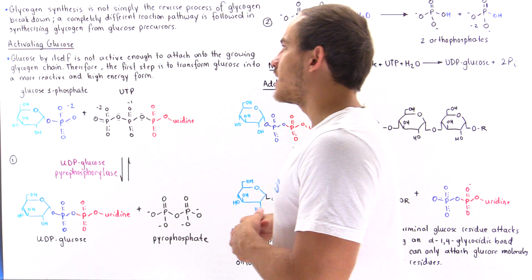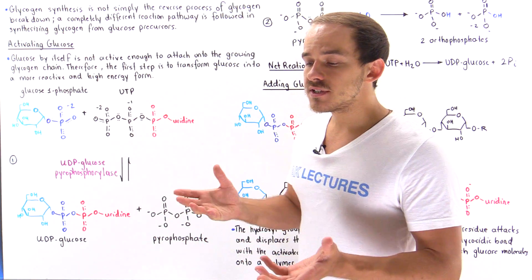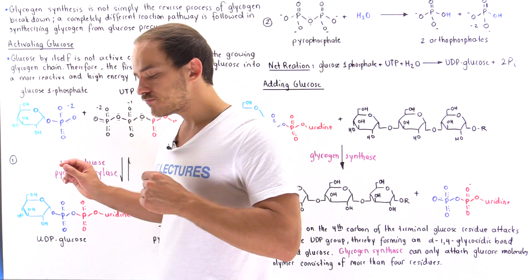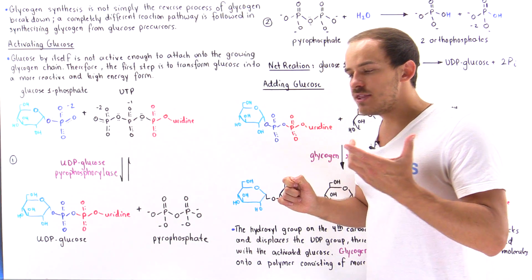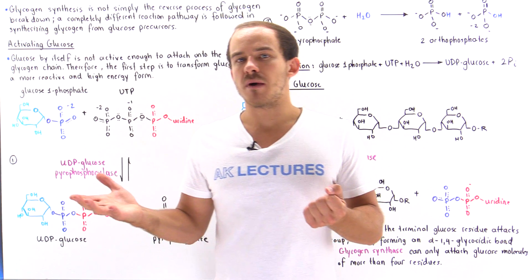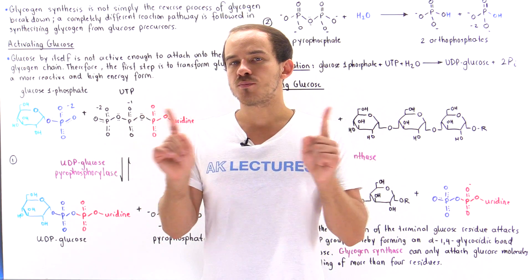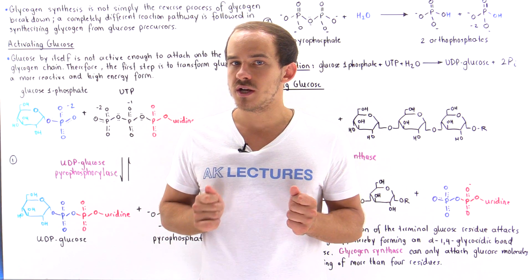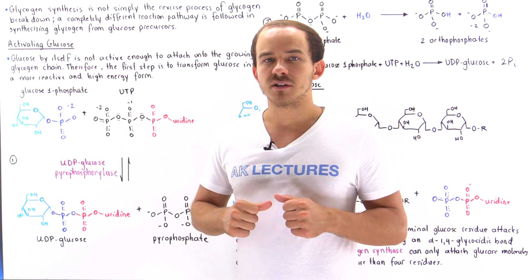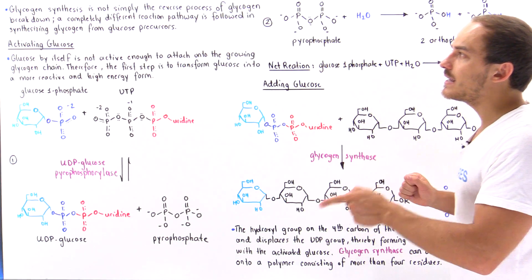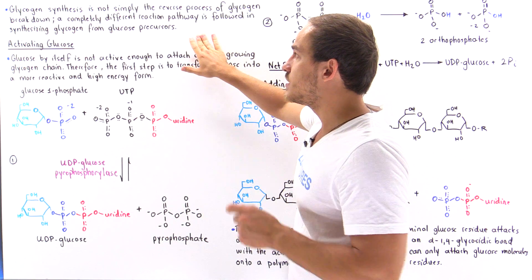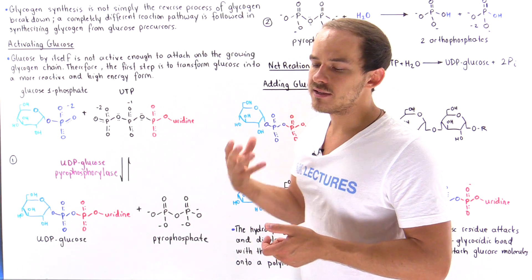What exactly is the process by which we synthesize glycogen in liver cells and skeletal muscle cells? We're going to focus on that briefly in this lecture and the next. In the same analogous way that gluconeogenesis — the building of glucose molecules — and glycolysis — the breaking down of glucose molecules — are not simply the reverse of one another, glycogen synthesis is not simply the reverse of glycogen breakdown. In fact, glycogen synthesis follows a completely different reaction pathway when it uses glucose precursors to build the glycogen polysaccharide.